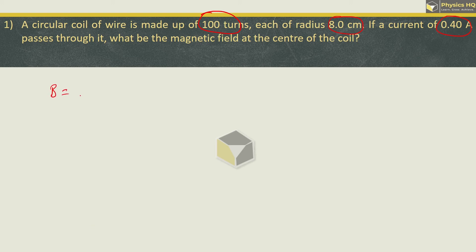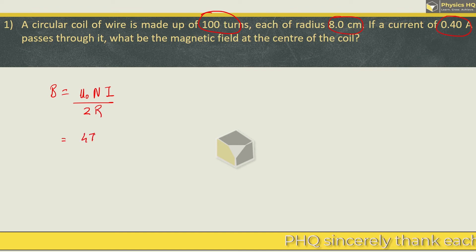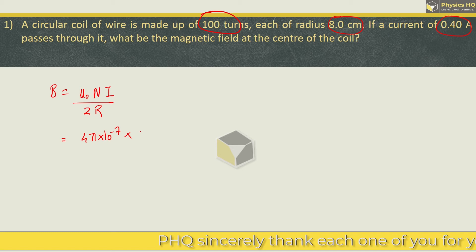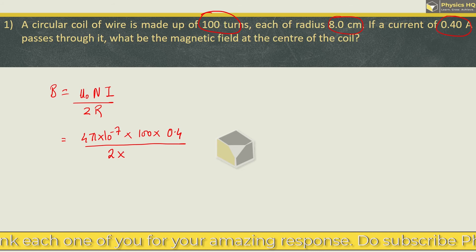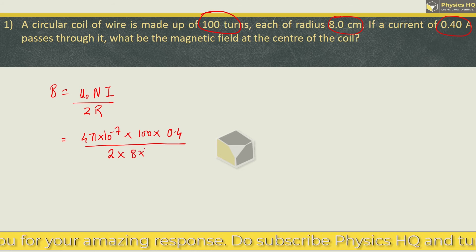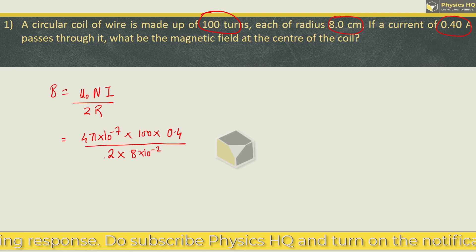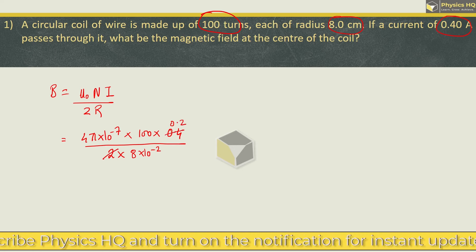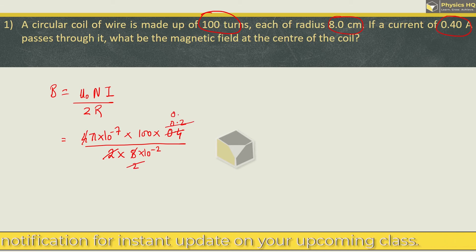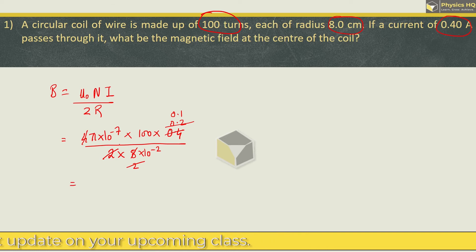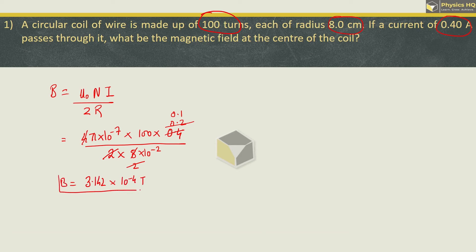So it is going to be simple. The formula is B equals μ₀ n i divided by twice the radius. μ₀ is 4π × 10⁻⁷, N is number of turns which is 100. Current is 0.4 divided by 2 into the radius which is 8 × 10⁻² meter. So this is the magnetic field in Tesla.